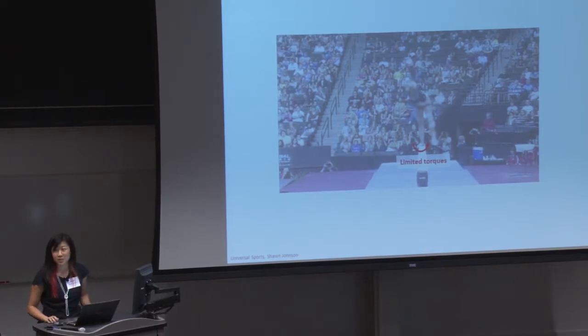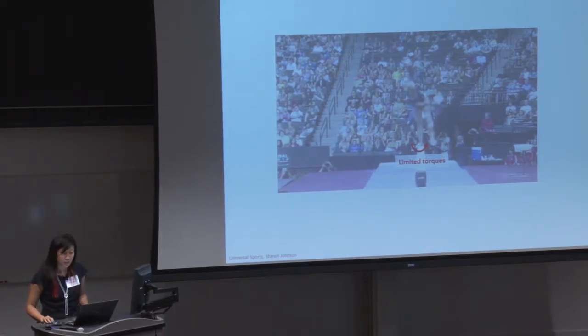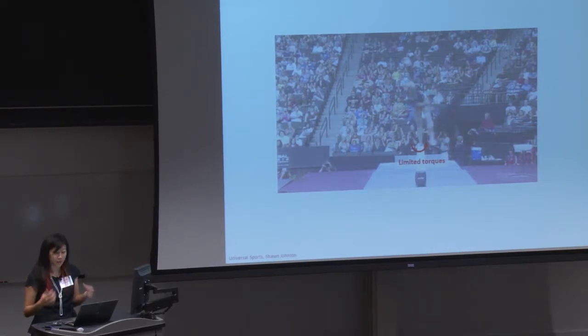Her stance foot is on the balance beam, and she can only exert limited torque. So it's up to her appendages, her arms, her trunk, to rotate through their inertia and move the center of mass indirectly so that she can regain balance. So what is she supposed to do with her appendages? And this is what we're trying to answer.